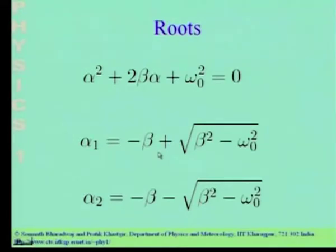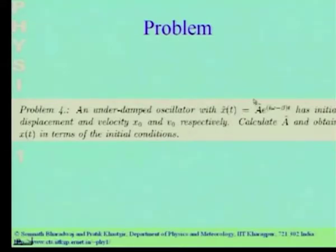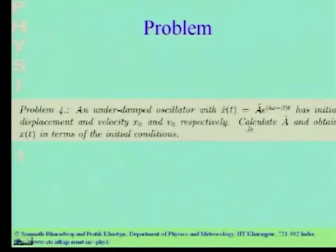Let us now take up a problem on under-damped oscillators. We have an under-damped oscillator whose motion is given in complex notation: x-tilde(t) = A-tilde·e^(i·omega minus beta)·t. We are dealing with the situation where the oscillator has position x-naught and velocity v-naught at initial time t-naught. We have to calculate the complex amplitude A-tilde in terms of the initial position and velocity, then determine x(t).